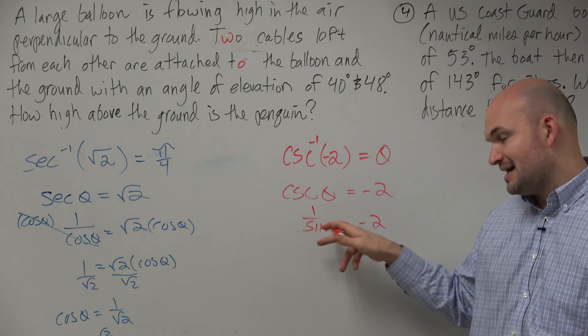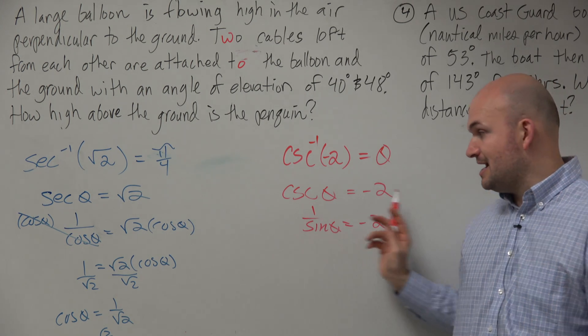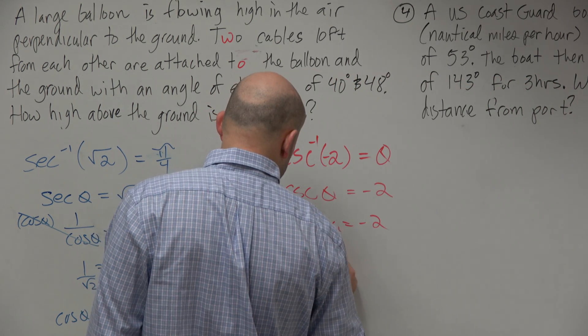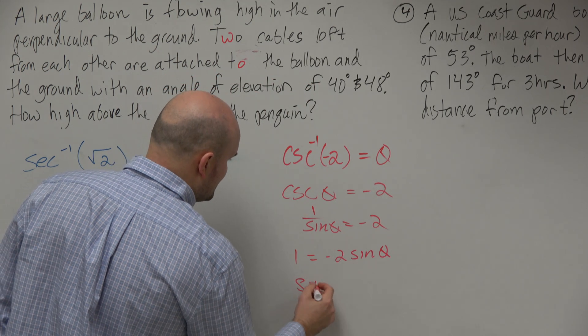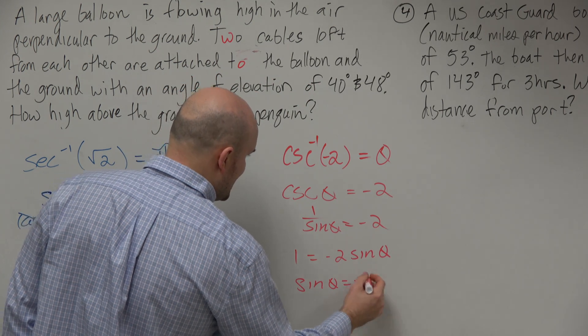Now, what I can do is I've got to get sine off the bottom. So if I multiply sine on both sides, I'll get 1 equals negative 2 times sine of theta, divided by negative 2. Sine of theta equals negative 1 half.